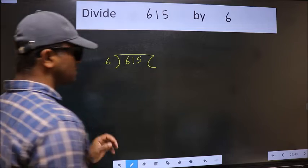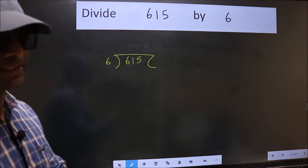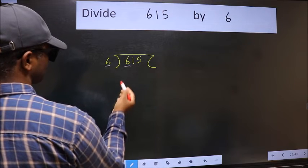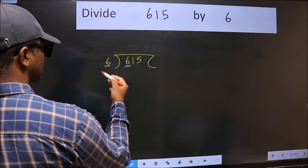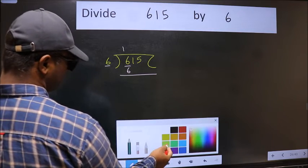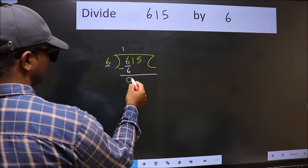This is your step 1. Next, here we have 6 and here also 6. When do we get 6 in the 6 table? 6 once 6. Now we should subtract. We get 0.